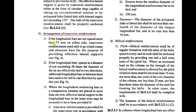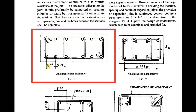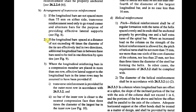Regarding arrangement of transverse reinforcement: if the longitudinal bars are not spaced more than 75 mm on either side, transverse reinforcement need only go round corner and alternate bars to provide effective lateral support. Referring to Figure 8 — if the distance between two longitudinal bars is not more than 75 mm, the transverse bar goes round corner and alternate bars. The outer bars connect with transverse reinforcement, while the middle bar does not need its own.